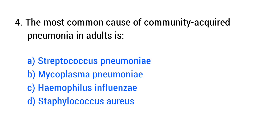Question number 4. The most common cause of community-acquired pneumonia in adults is? The right answer is option A: Streptococcus pneumoniae.